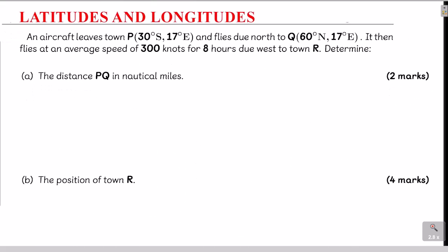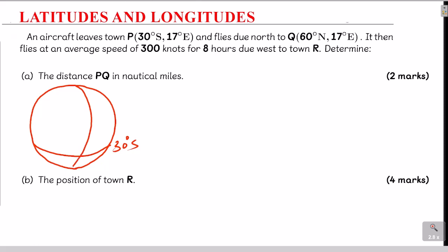Let's go to the first part. We begin by drawing a rough sketch of towns P and Q to establish whether they lie on a circle of latitude or the great circle. P is at 30 degrees south, and the longitude is 17 degrees east.